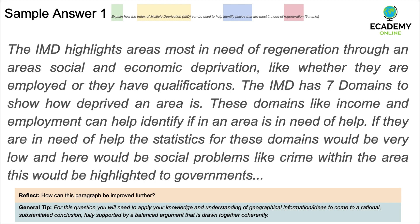Sample answer one: 'The IMD highlights areas most in need of regeneration through an area's social and economic deprivation, like whether they are employed or have qualifications. The IMD has seven domains to show how deprived an area is. These domains — like income and employment — can help identify if an area is in need of help. If they are in need of help, the statistics for these domains would be very low and there would be social problems like crime within the area. This would be highlighted to governments.' The elements covered are broadly correct, but on the whole a lot of what's discussed is quite generic and not specific.